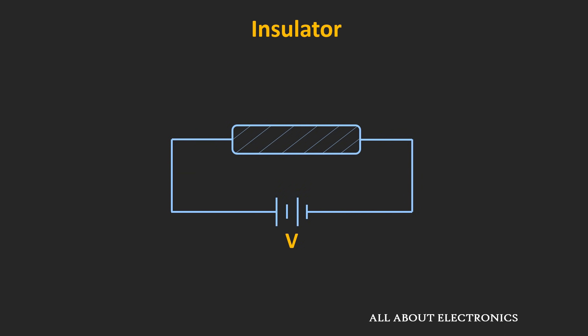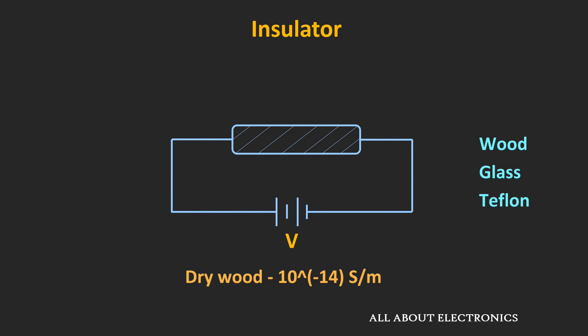On the other end, an insulator hardly allows any flow of charge — it has very poor conductivity. Wood, glass, and Teflon are a few examples of insulators. Taking dry wood as an example, its conductivity is roughly around 10 to the power of minus 14 siemens per meter, making wood a very good insulator.